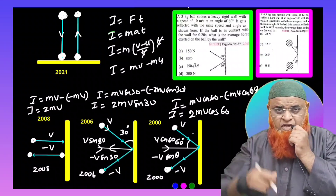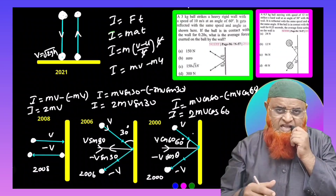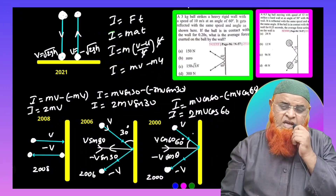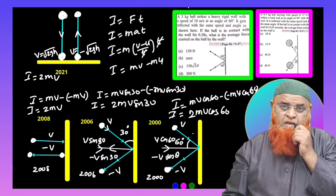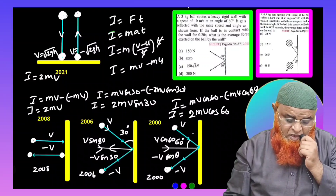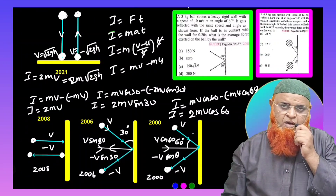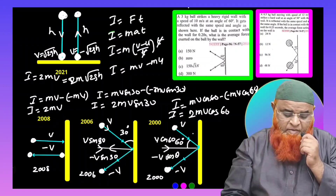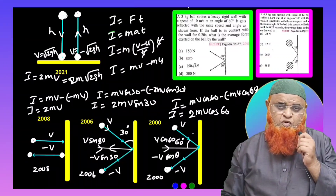The fourth case was asked in 2021: a ball is dropped and strikes the ground with velocity V = root of 2GH, according to kinematics. When it rebounds back to the same height, it returns with velocity minus root 2GH. Therefore, impulse = 2MV, where V is root 2GH, giving impulse = 2M × root(2GH). Since it rebounds to the same height, both strike and rebound speeds are root 2GH.